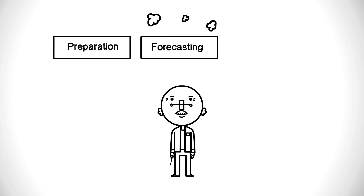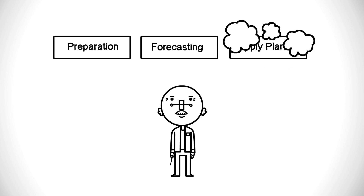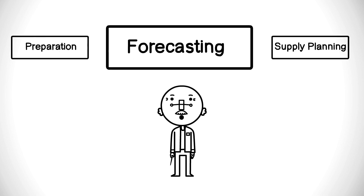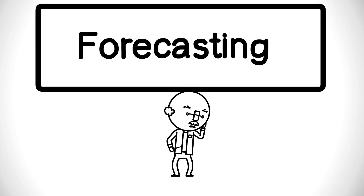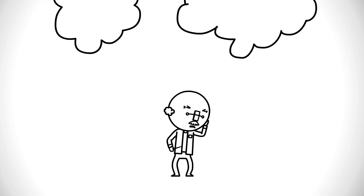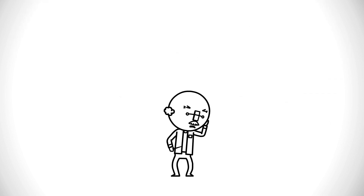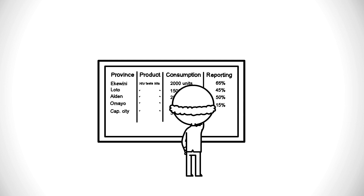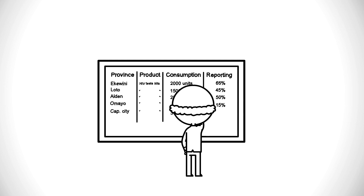The quantification process has three basic steps: preparation, forecasting, and supply planning. In the forecasting step, we take information collected during preparation and estimate the quantity of each product that will be consumed in the future. Let's find out why forecasting is so important in your work.